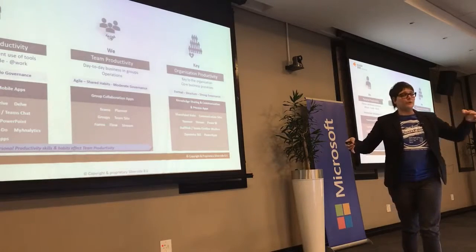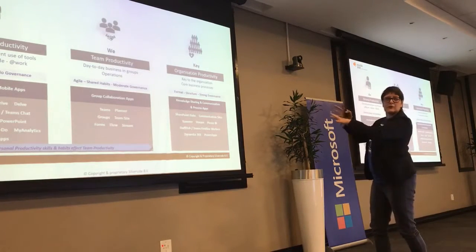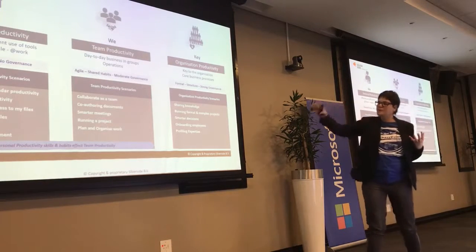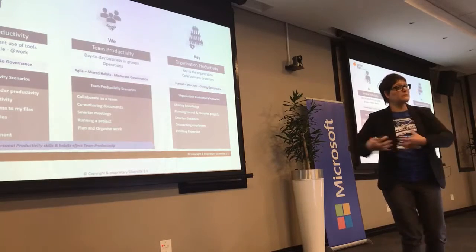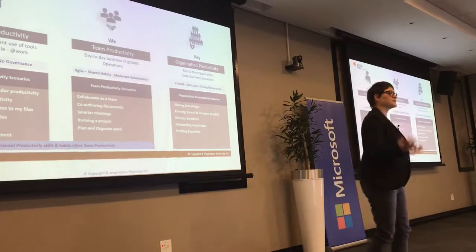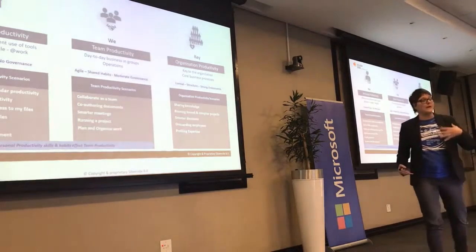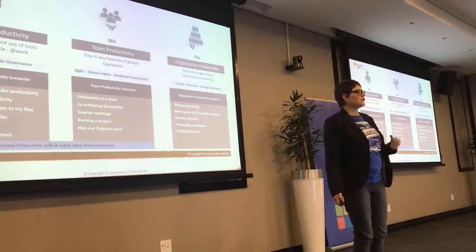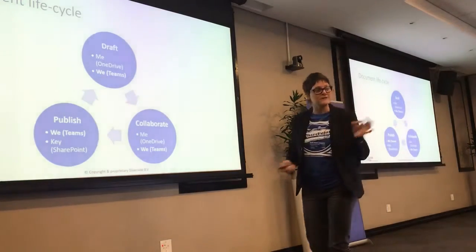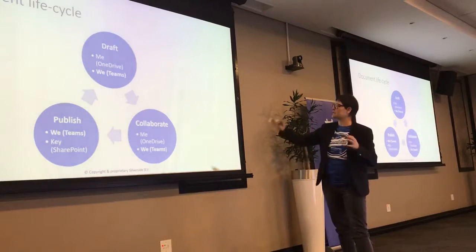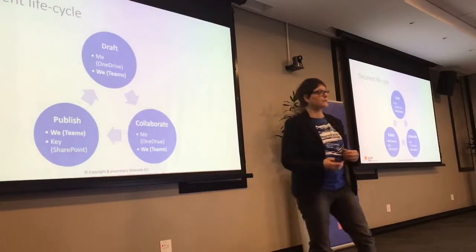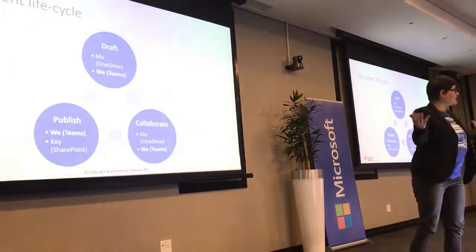Particular apps fit one area of the model better than others, and it's also useful for evaluating new apps — asking where does this fit? We also use this model for different productivity scenarios: personal, team, and organizational. Co-authoring documents is positioned in the 'We' area, where as a group you want to be agile, quick, and efficient in creating documents. The co-authoring lifecycle takes a document from draft to collaborate to publish — you may start in OneDrive or Teams and end up in SharePoint for publishing to a bigger audience.